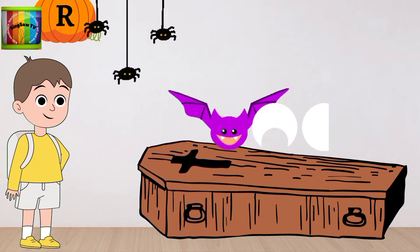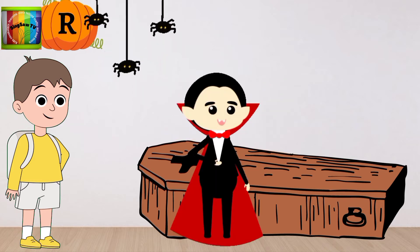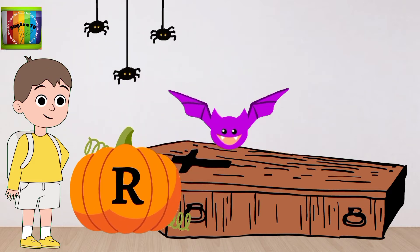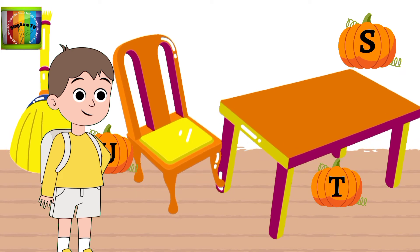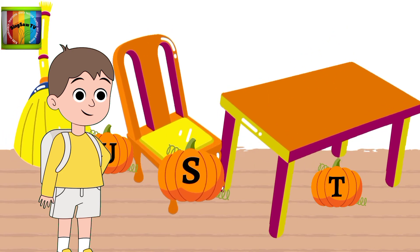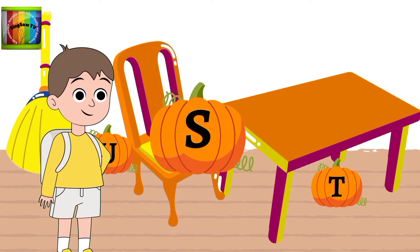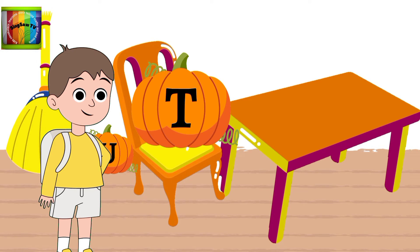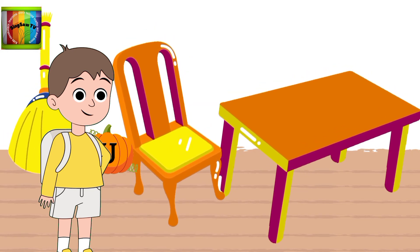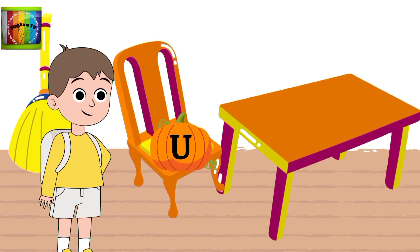R pumpkin, can you see where the letter R pumpkin? Well done! Let's find the letter S pumpkin. Can you see where the letter S pumpkin? Yes! Correct! Now let's find T pumpkin. Can you see where the letter T pumpkin? Great job! Let's find the letter U pumpkin. Can you see? Well done!